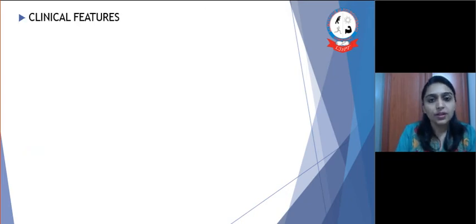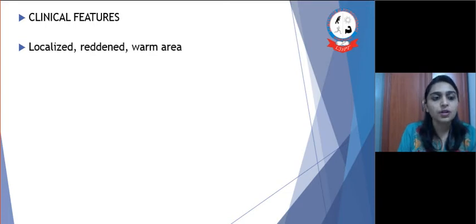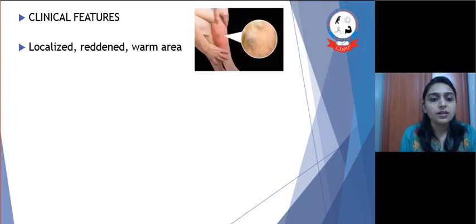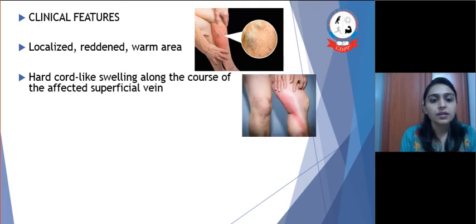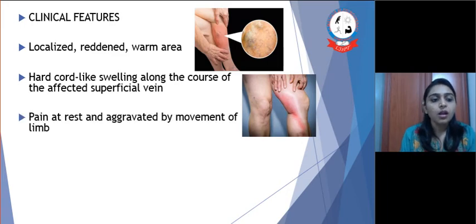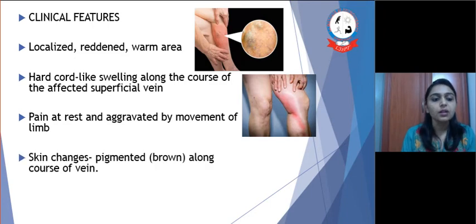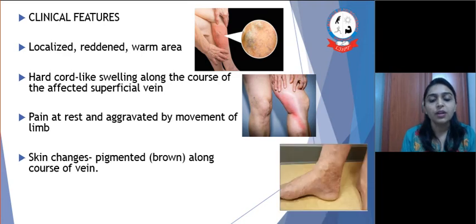The clinical features seen in a person suffering from superficial venous thrombosis are: first, a localized red and warm area, which may be seen around the site of the lesion; second, a hard cord-like swelling along the course of the affected superficial vein; third, pain at rest aggravated by movement of the limb; and skin changes — pigmented brown discoloration along the course of the vein.